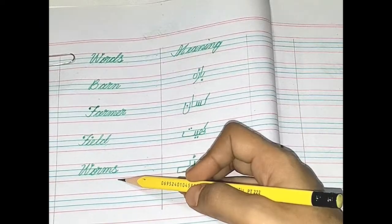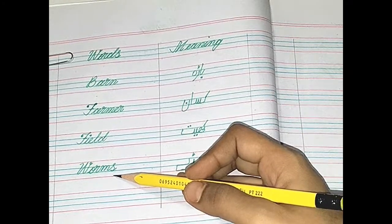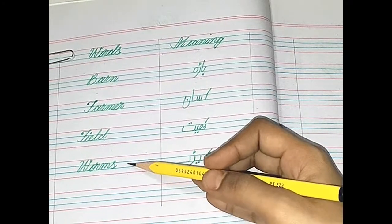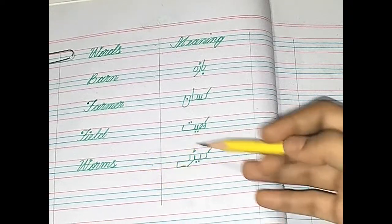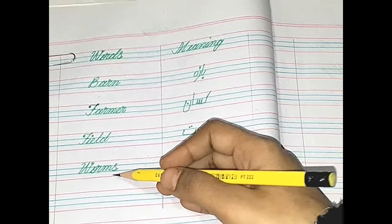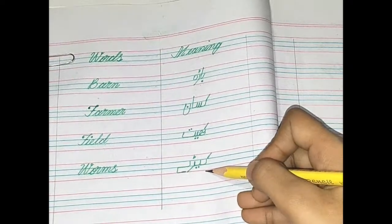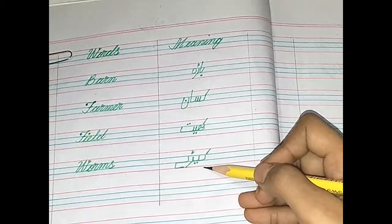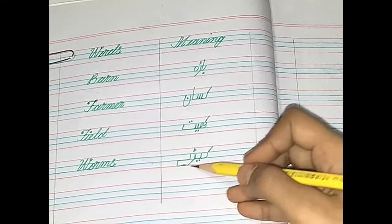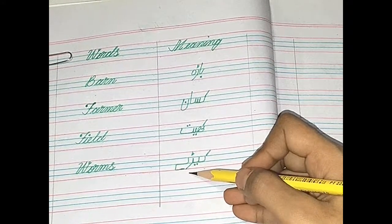Number 4: W-O-R-M-S. Worms. Worms means? Kirae. Kaaf, ye, te, re, bada ye, te, re.